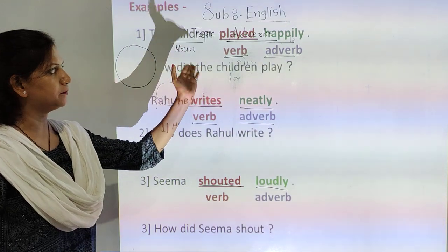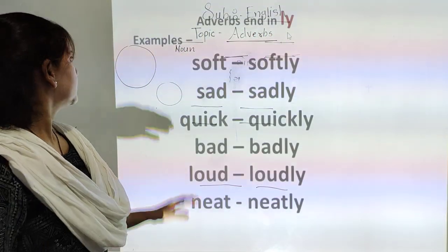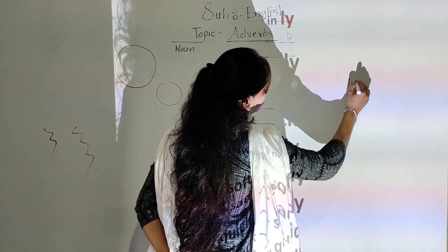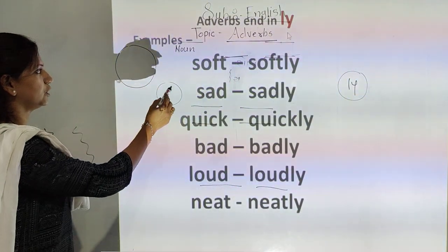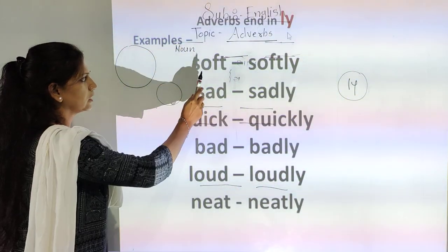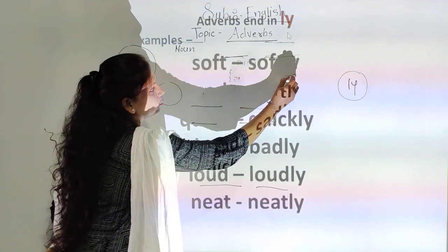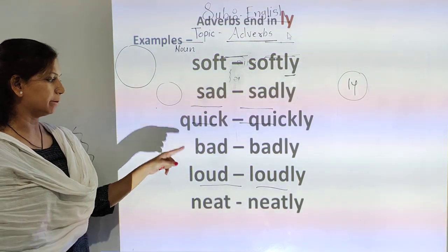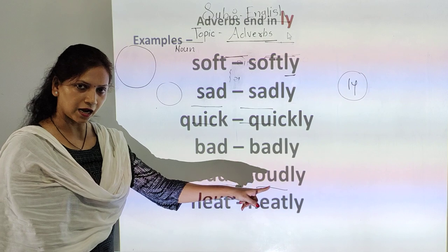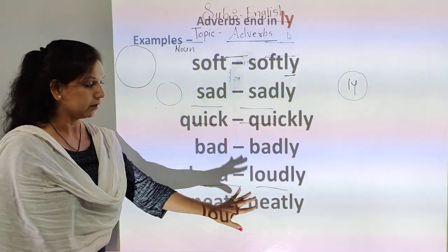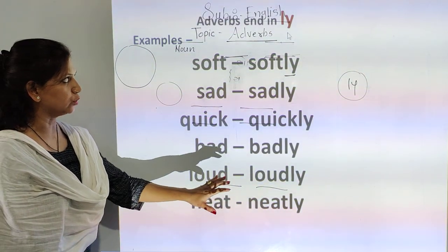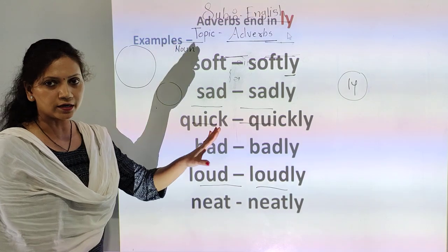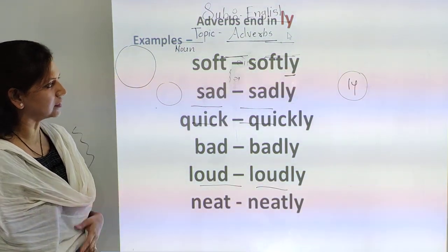Verbs and adverbs. Adverbs end in -LY. Here you can see: soft → softly, sad → sadly, quick → quickly, bad → badly, loud → loudly, neat → neatly. The words tell us more about how an action is done. Most of these words end with the letters L-Y. This is also called 'LY words.'